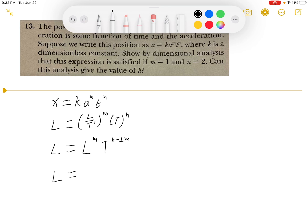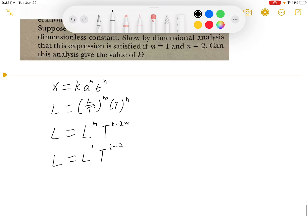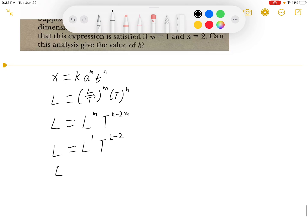we will have L equals L to the first power times T to the 2 minus 2. So we will eventually have L equals L,